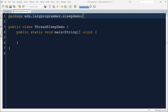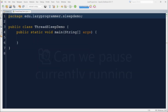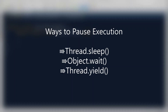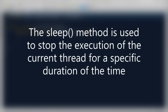Suppose we need to pause the execution of the currently running thread — how can we achieve it? We will discuss three different ways to pause the execution of the currently running thread. And in the end, we will also see why we have three ways just to pause the execution. The first and most basic one is using the sleep function of the Thread class: `Thread.sleep()`.